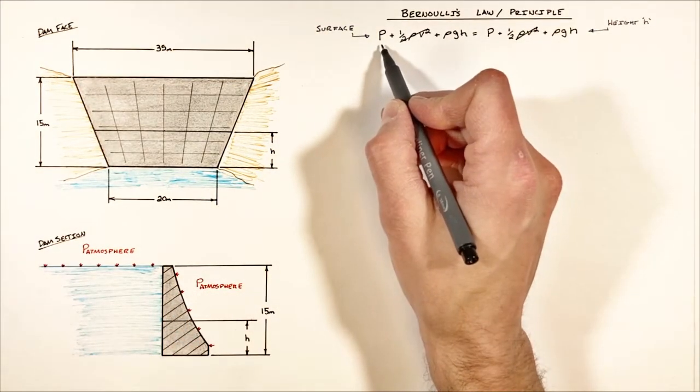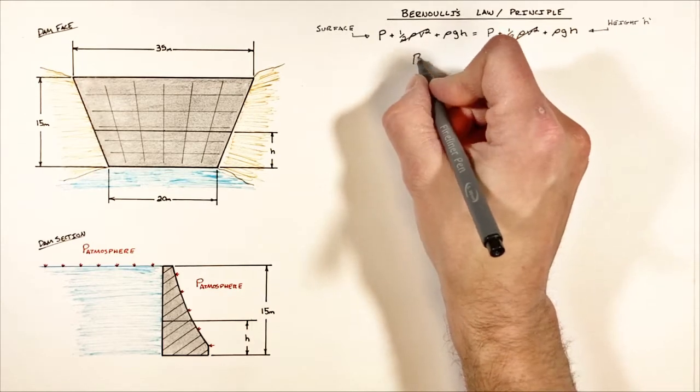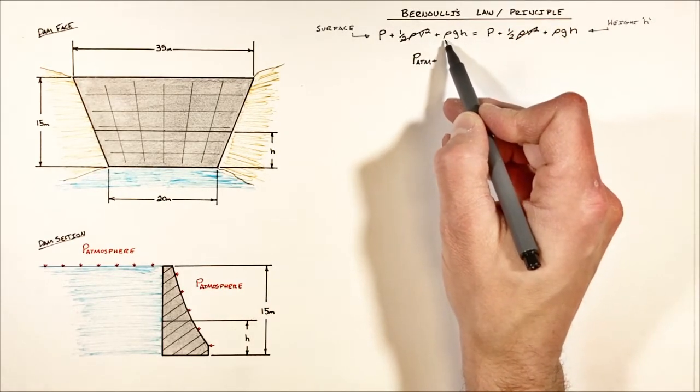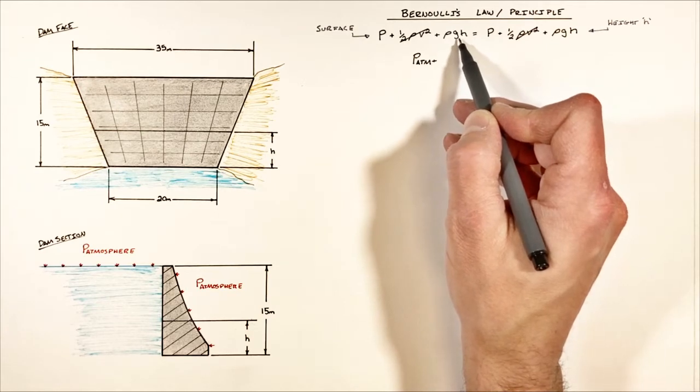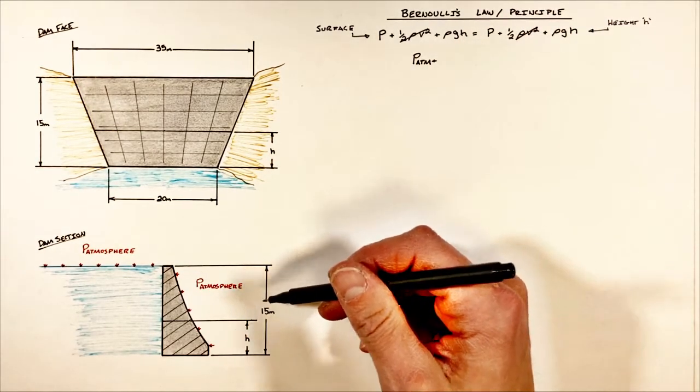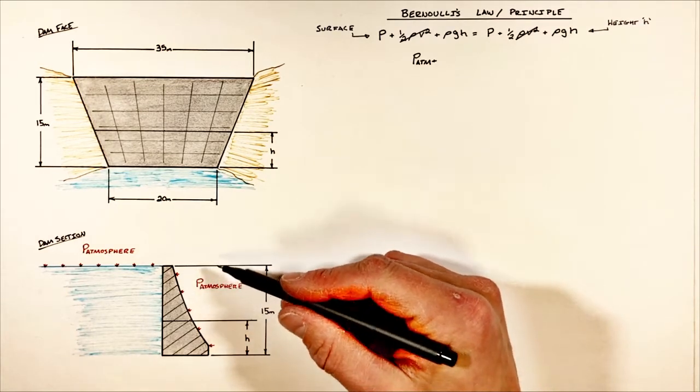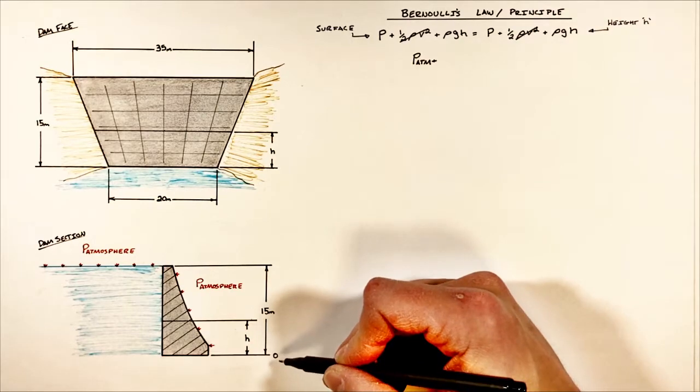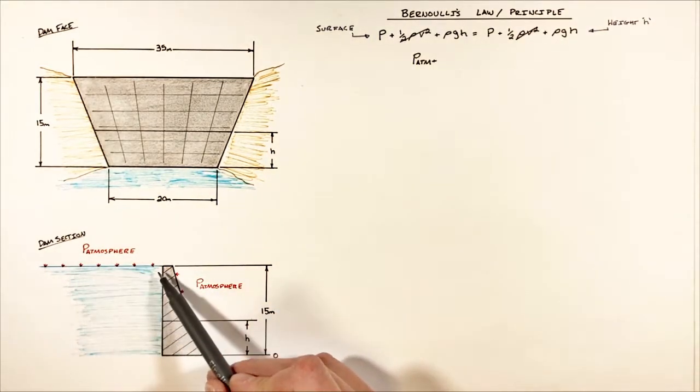So up here in Bernoulli's law, our first term is going to be the atmospheric pressure. The next term is the hydrostatic pressure, which is the density of the fluid times the acceleration due to gravity times the height. The height can be measured relative to wherever we choose to be a reference height of zero. In this problem I'm going to say this lowest point is a height of zero, so up here at the surface of the fluid the height is going to be 15 meters.